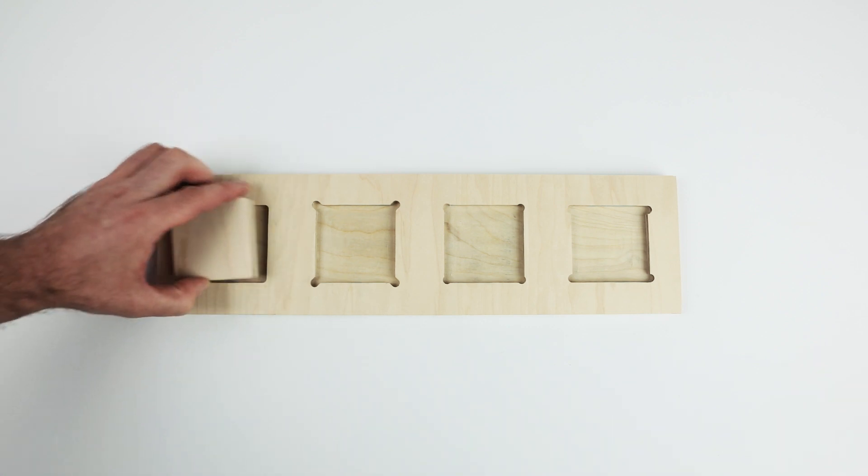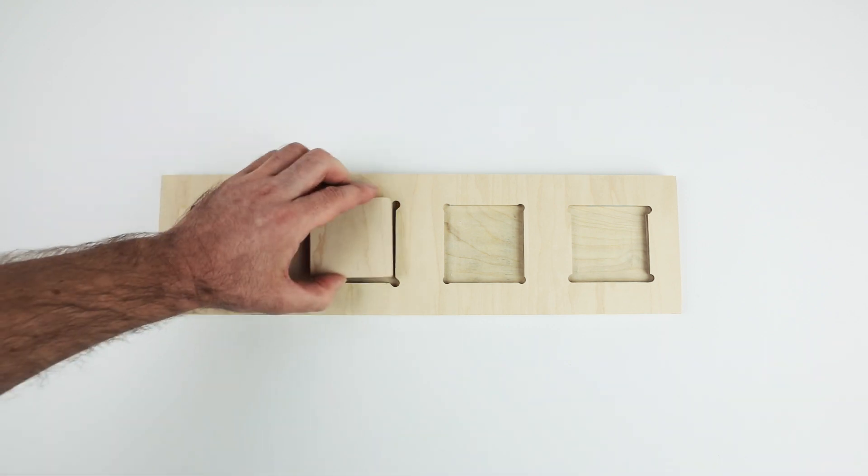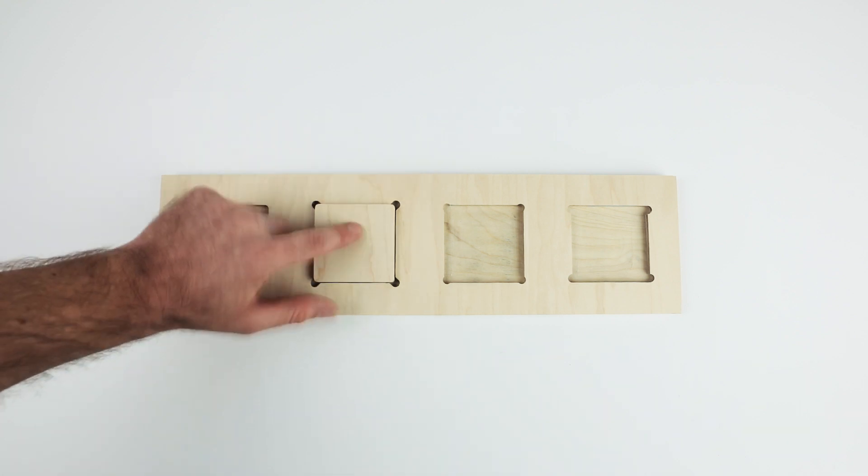So if it was a 100% square, we wouldn't be able to fit it in this one. But these other ones would accommodate it just fine.